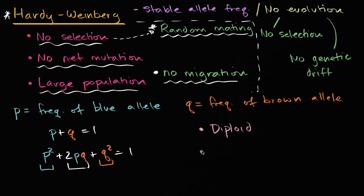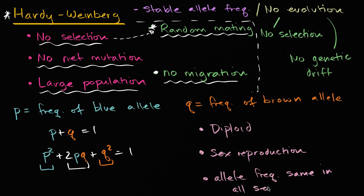We are assuming sexual reproduction, that we're not dealing with cloning or just budding, where you're just a copy of another organism from generation to generation. We're assuming that whether you are blue or brown, whether you have those versions, that's not correlated with what sex you are. So allele frequency same in all sexes.